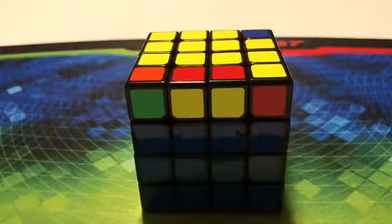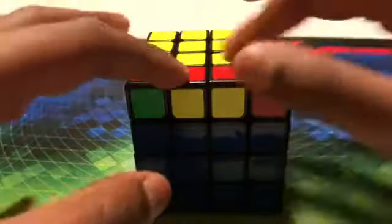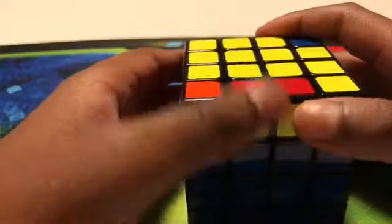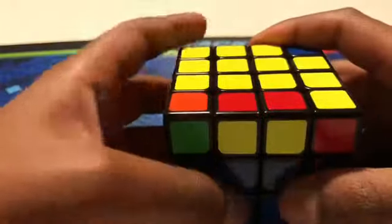You would have this cube. So this is an OLL parity where this piece is flip-flopped, and if that piece wasn't flip-flopped, we would have the whole entire cross solved.